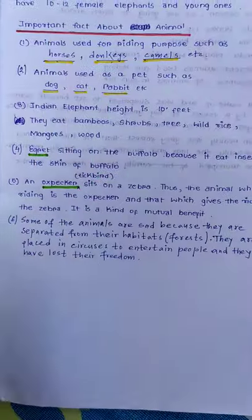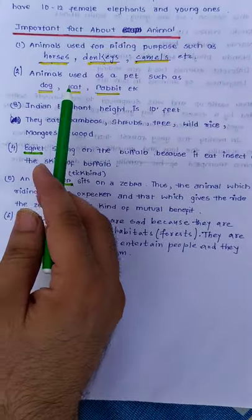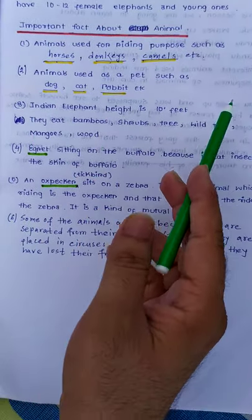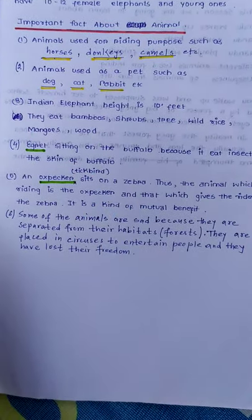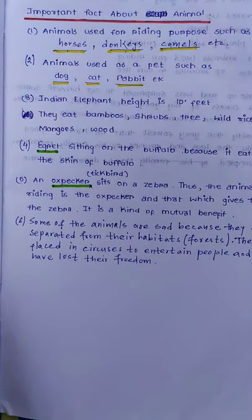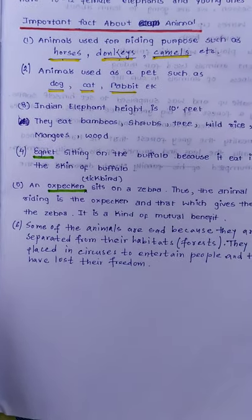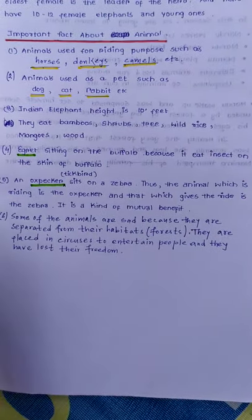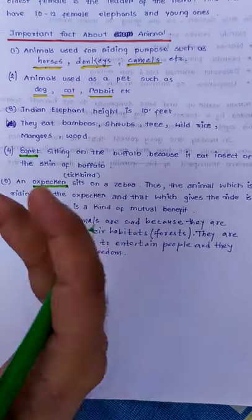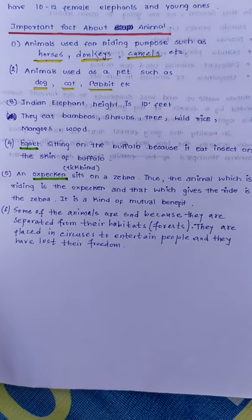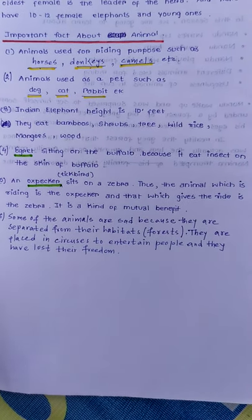Next, animals used as pets — such as dogs, cats, and rabbits. These are animals which we love so much and keep as pets.